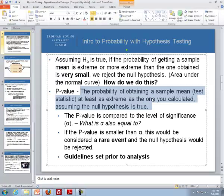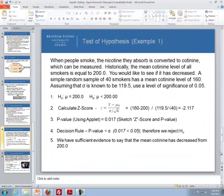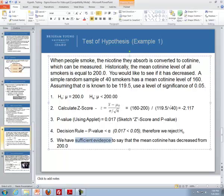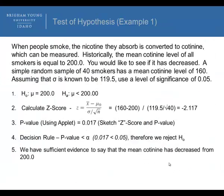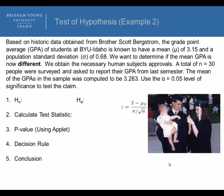This is an important definition you'll need throughout the course. Our p-value is .017, which is less than our level of significance of .05. Therefore, we reject the null. Since we reject the null, we have sufficient evidence to say that the mean cotinine level has decreased from 200 mg per gram. Now, stop the video and try the next example by yourself.